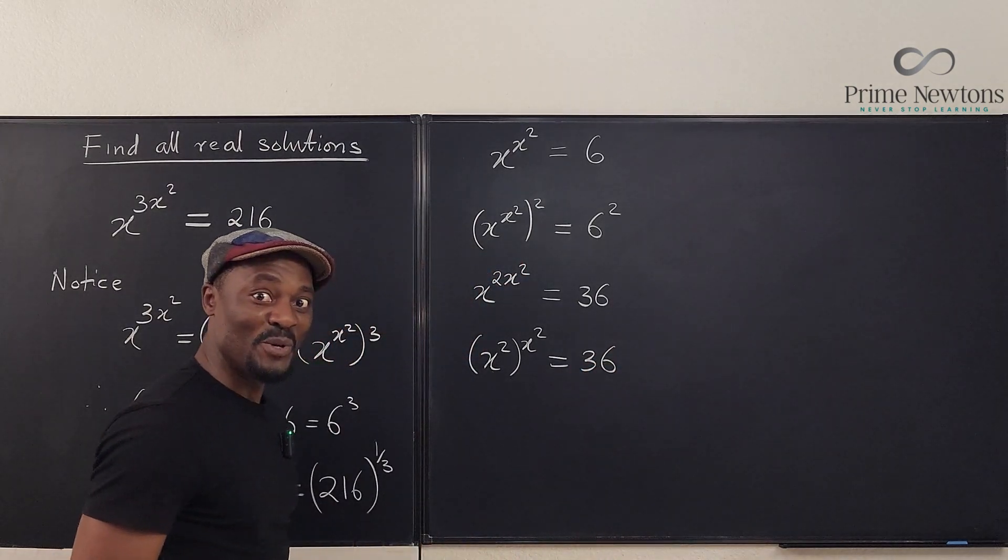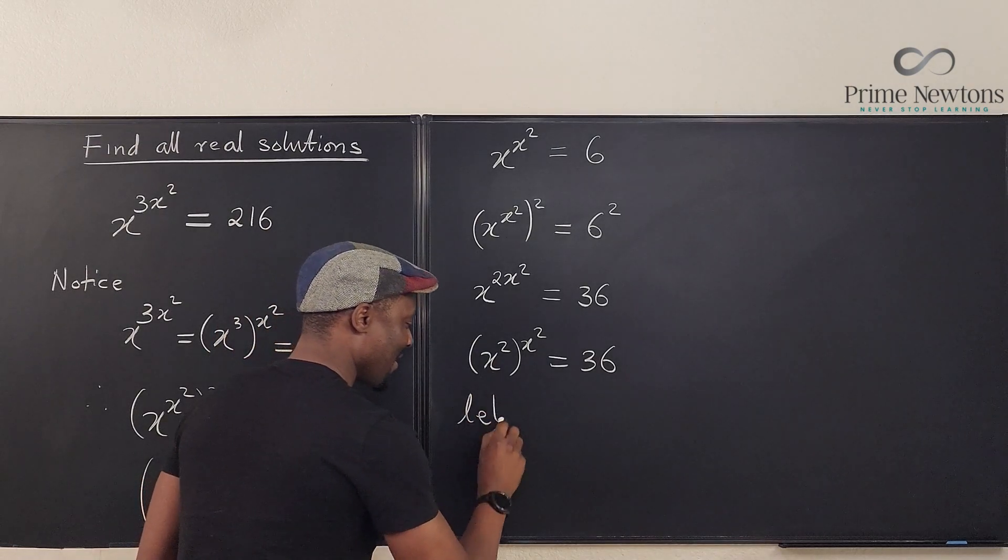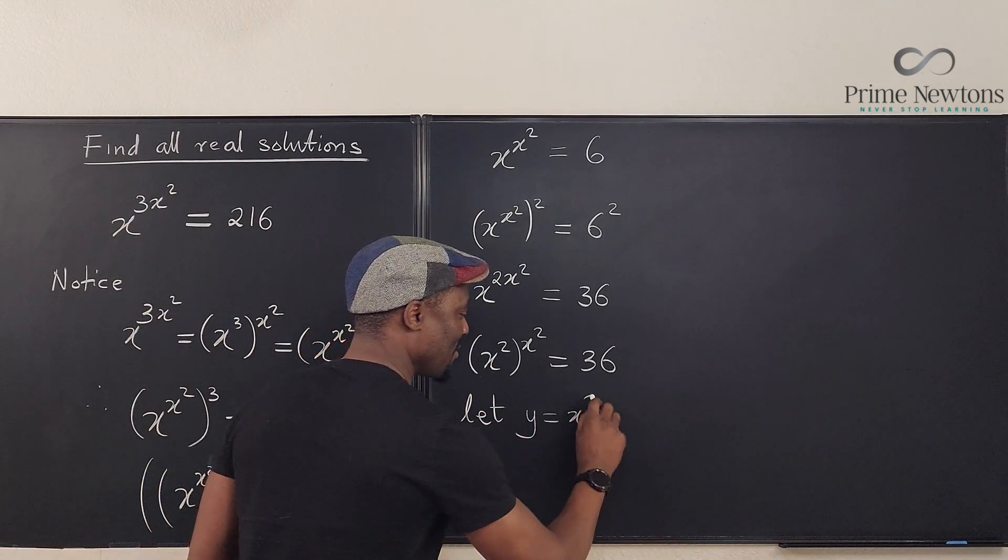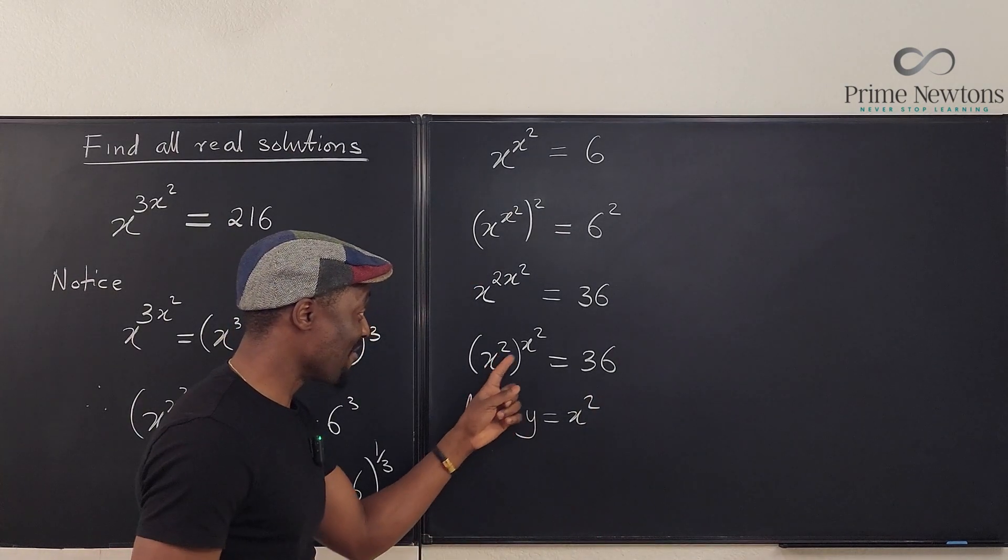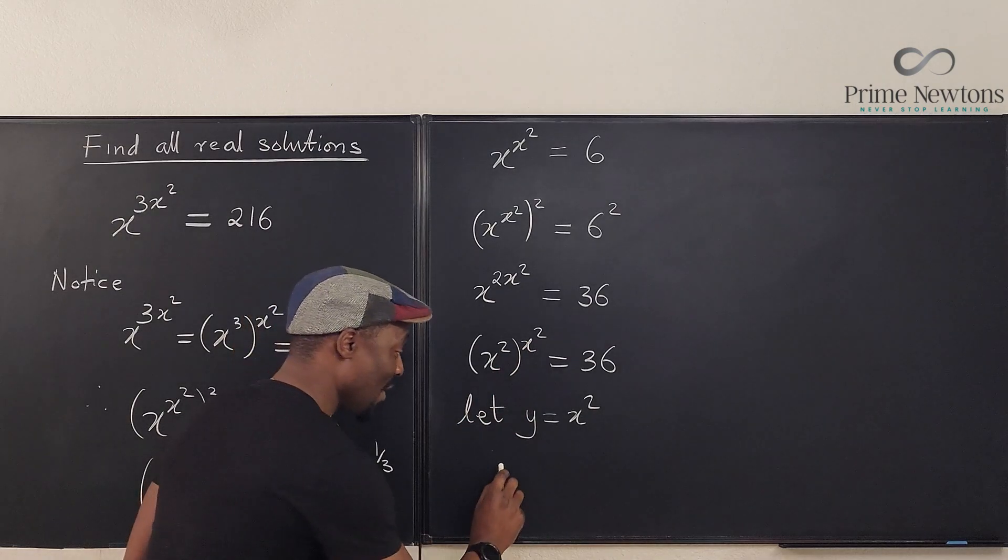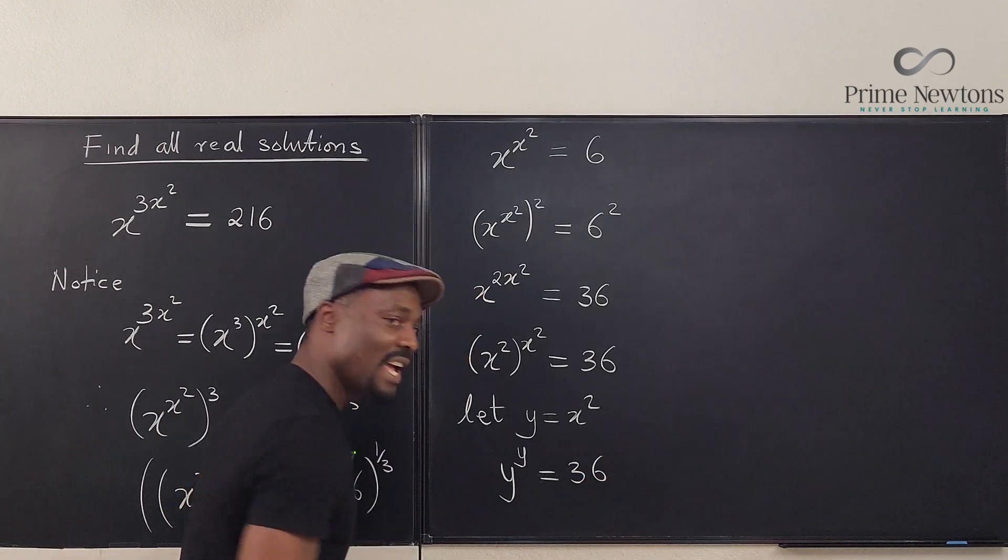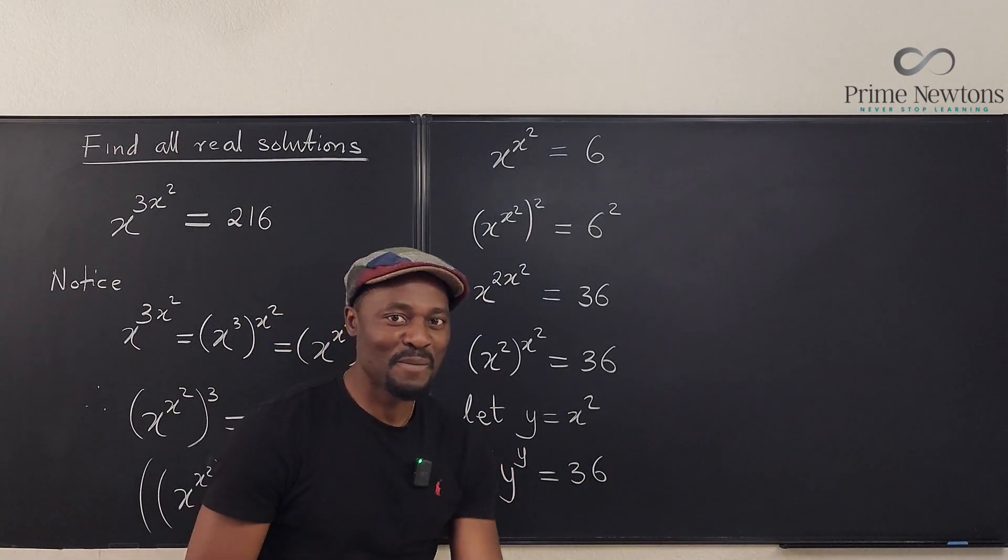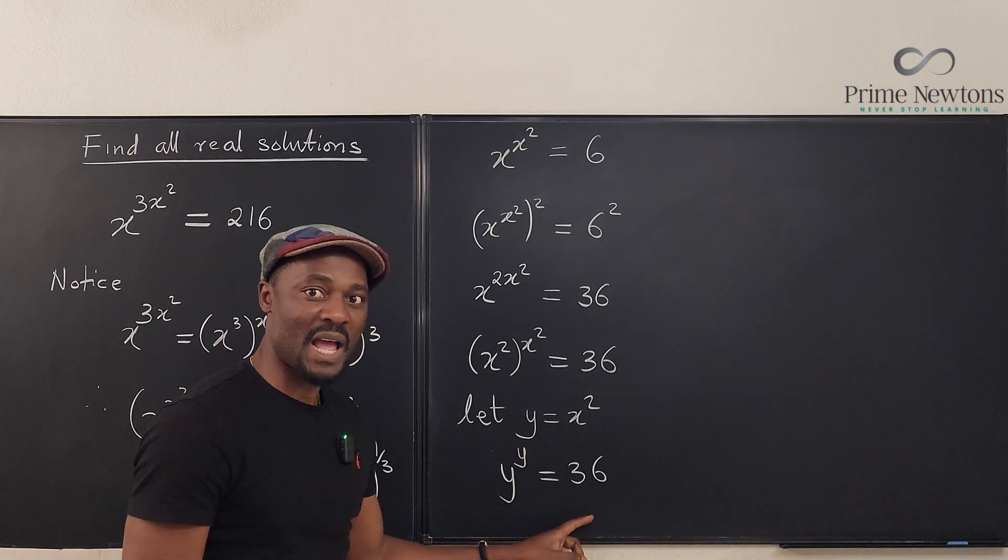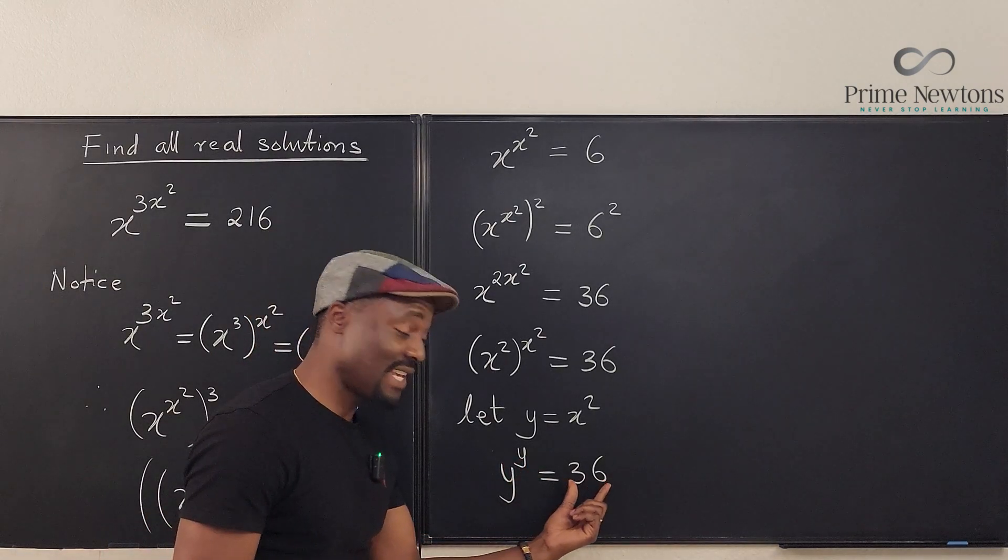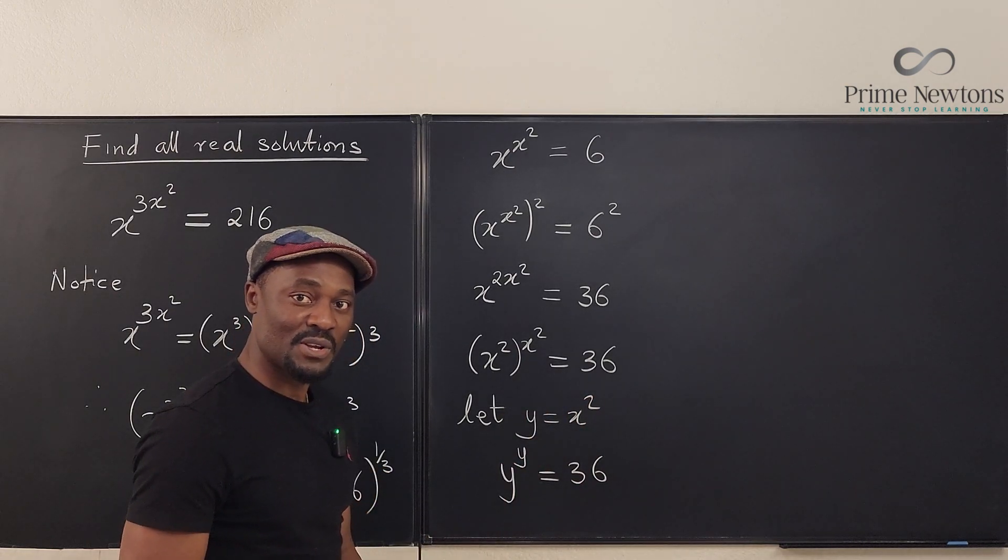I'm almost done. Let's do some substitution. Let y be equal to x². If I make y x², I can write this expression as y raised to power y is equal to 36. Now I need to just find a number such that when I raise it to itself, my answer is going to be 36. And after getting that number, I can come back to this relationship and take the square root and see what the number is going to be.